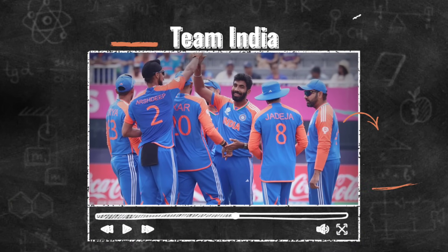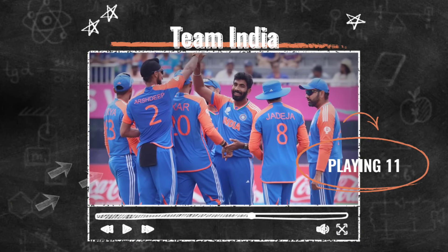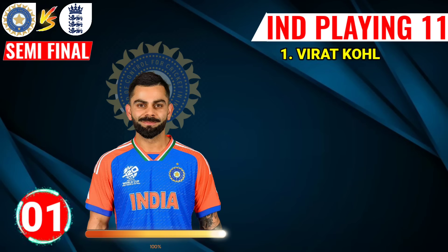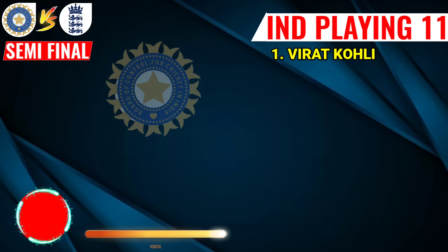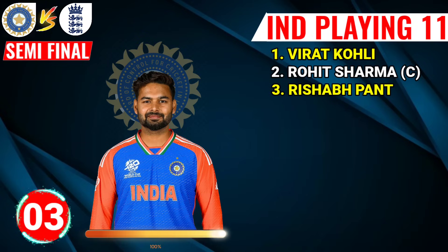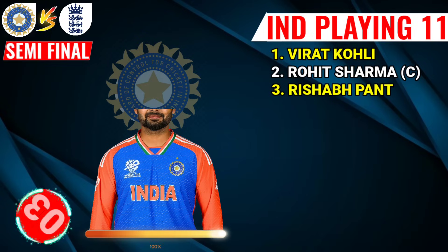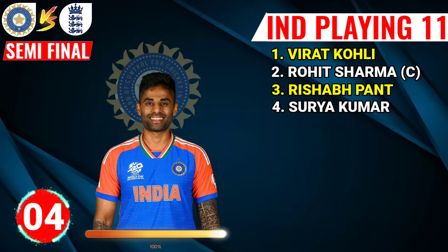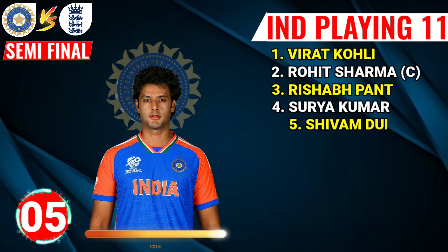Team India Final Playing 11. Number 1: Virat Kohli, Right Hand Batsman. Number 2: Rohit Sharma, Right Hand Batsman and Captain. Number 3: Rishabh Pant, Left Hand Batsman. Number 4: Suryakumar Yadav, Right Hand Batsman. Number 5: Shivam Dube, Left Hand All-Rounder.